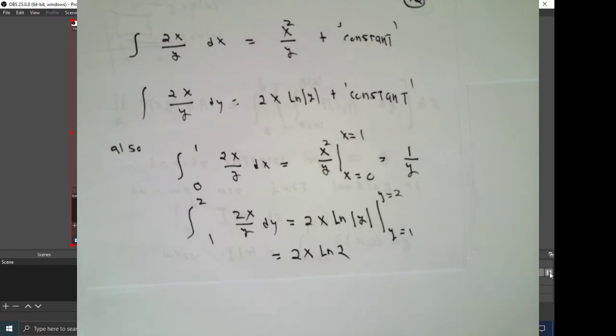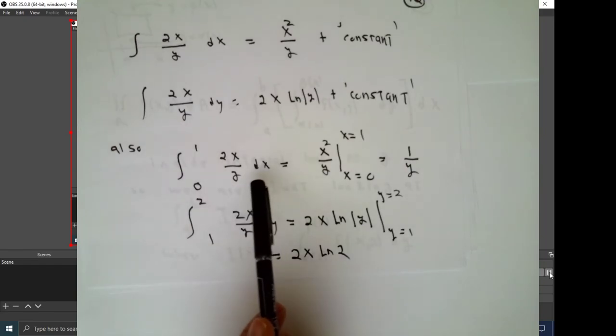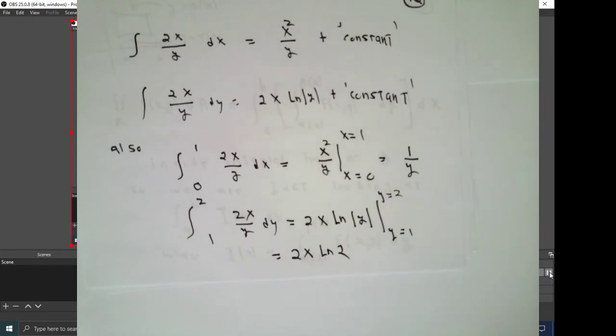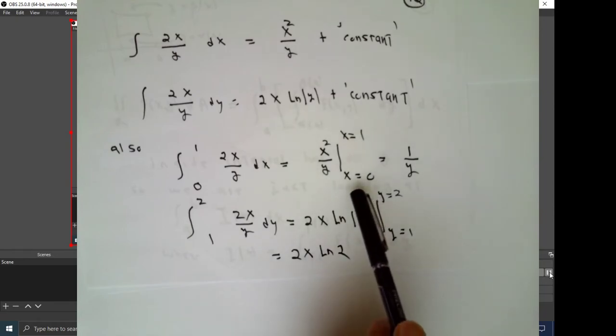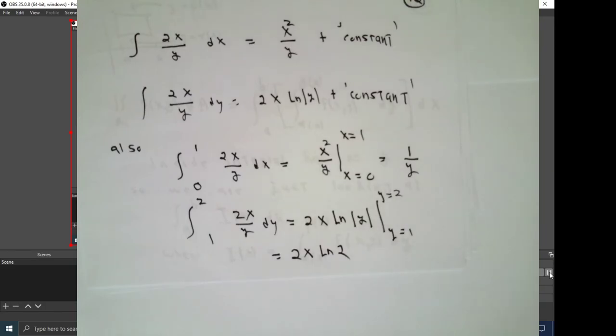These are indefinite integrals. You can do definite integrals just as well. The integral from 0 to 1 of 2x over y with respect to x. We've already stated what an antiderivative is. We need not bother with the constant of integration because it cancels out anyway. For emphasis, I write x equals 0 and x equals 1. So you would have 1 squared over y minus 0 squared over y, which is 1 over y.